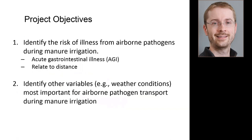Our objectives were to identify the risk of illness from airborne pathogens during manure irrigation downwind of the irrigation area, specifically based on measuring concentrations of microbes in the air — something nobody has ever done, which we hoped would reduce uncertainty compared to previous studies. The risk of illness we're looking at is acute gastrointestinal illness involving vomiting or diarrhea, such as from E. coli, Campylobacter, or Salmonella. We also wanted to identify variables other than distance that are important for airborne pathogen transport, such as wind speed, sunshine, relative humidity, and temperature, as these are potentially useful for designing best management practices.